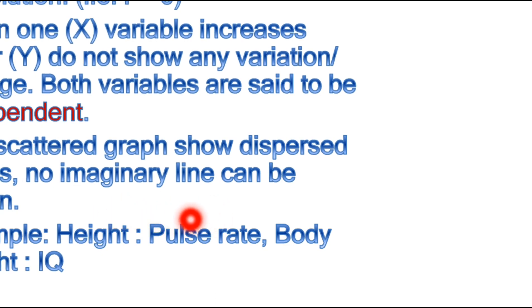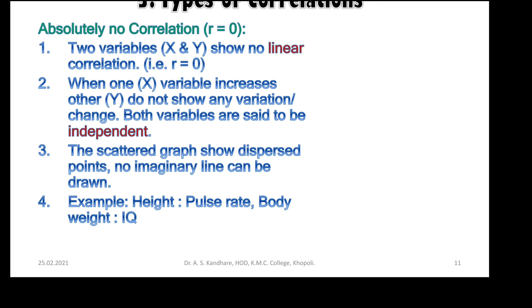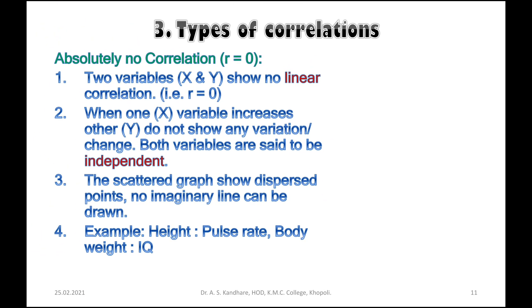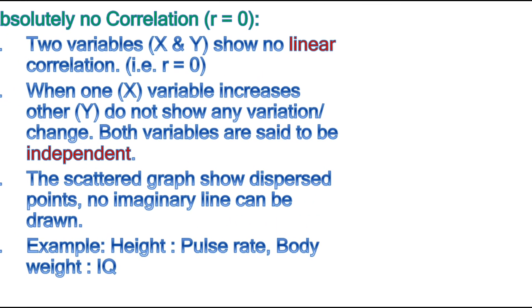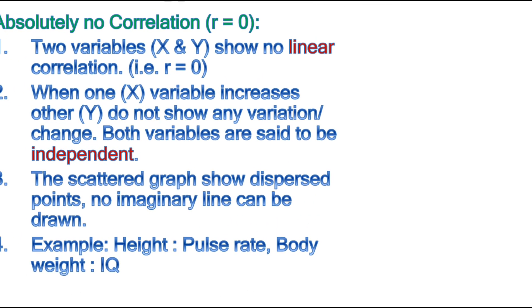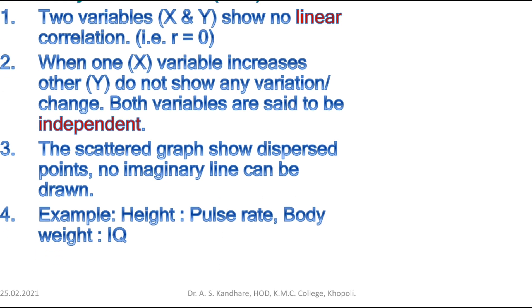Another example of absolutely no correlation is body weight and IQ. Body weight as one variable and IQ as another variable show no relationship between them.